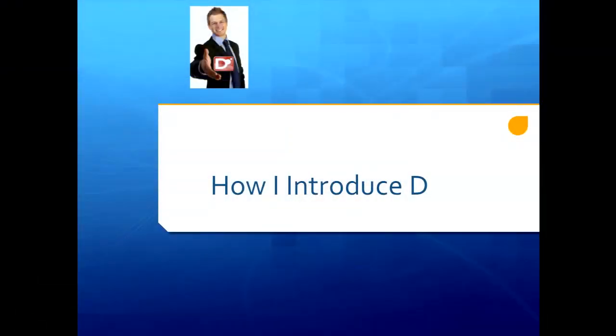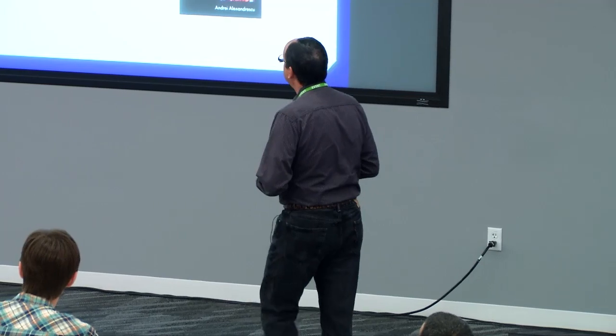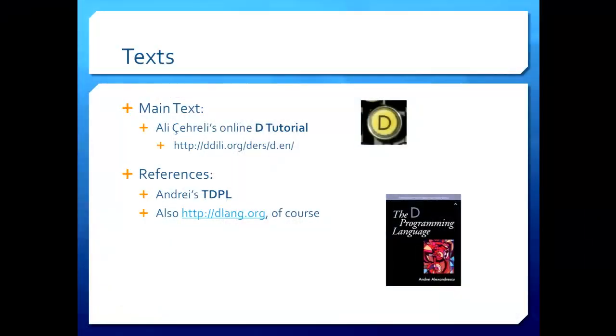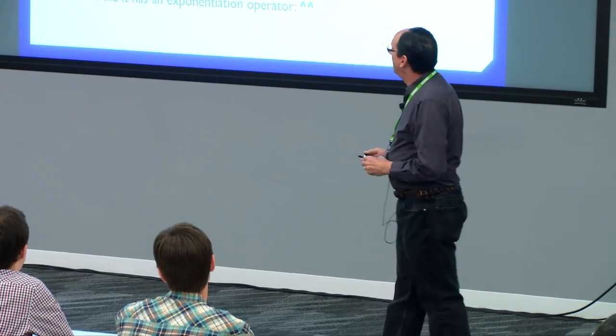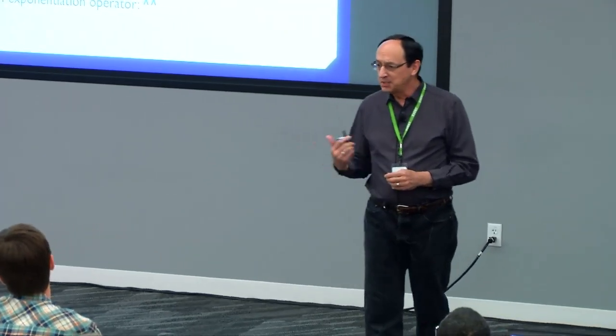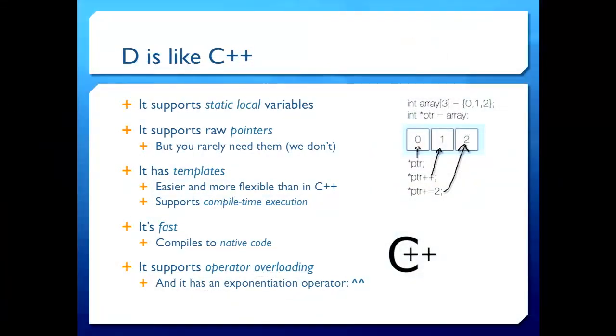So how do I introduce D? And there's the picture for Walter there at the top. Well, our main text is Ali's online D tutorial. So thank you for that. We used to use Andre's book, and he's not here for me to apologize to. But it's a little out of date. It's a print book, and so what can I tell you? So it's just a reference. But we use Ali's online tutorial, which, of course, is always up to date and getting better all the time. So here is how I introduce D. This is an actual slide for my presentation, except I don't use pictures. Maybe I should. So I'll start putting more pictures in my code or in my slides.